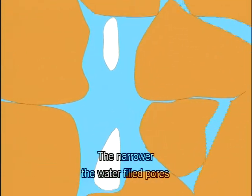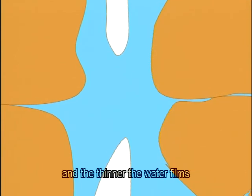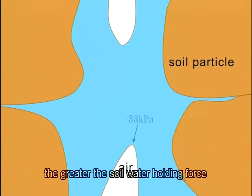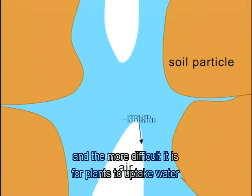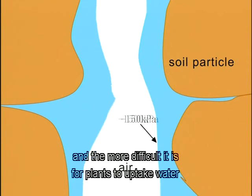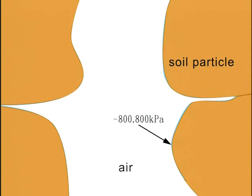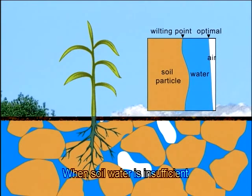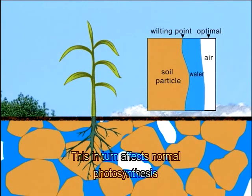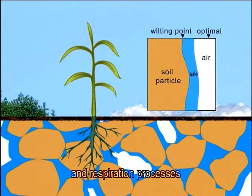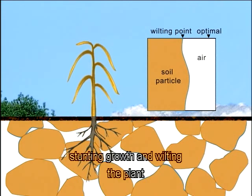The narrower the water-filled pores and the thinner the water films, the greater the soil water holding force and the more difficult it is for plants to uptake water or for water to move. When soil water is insufficient, plants absorb less water. This in turn affects normal photosynthesis and respiration processes, stunting growth and wilting the plant.